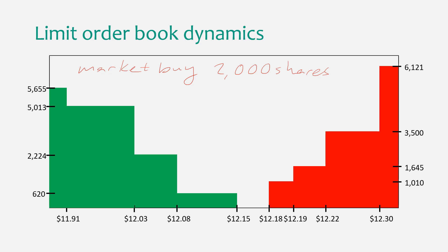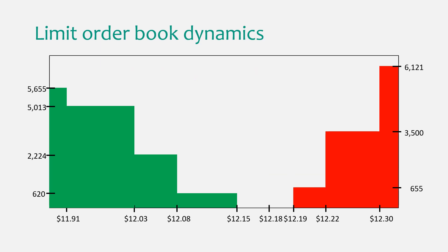The market buy order will take away liquidity. You want to buy shares, so you look at the red bars — the sell side. You can see you won't execute fully at the best price of 12.18, because there are only 1010 shares available there. You completely take away that block, and then take 990 more shares from the next block. Once your order is executed, the order book transforms — that first bar is gone and part of the second is gone, and the bid-ask spread has become wider, moving from 12.18 to 12.19.